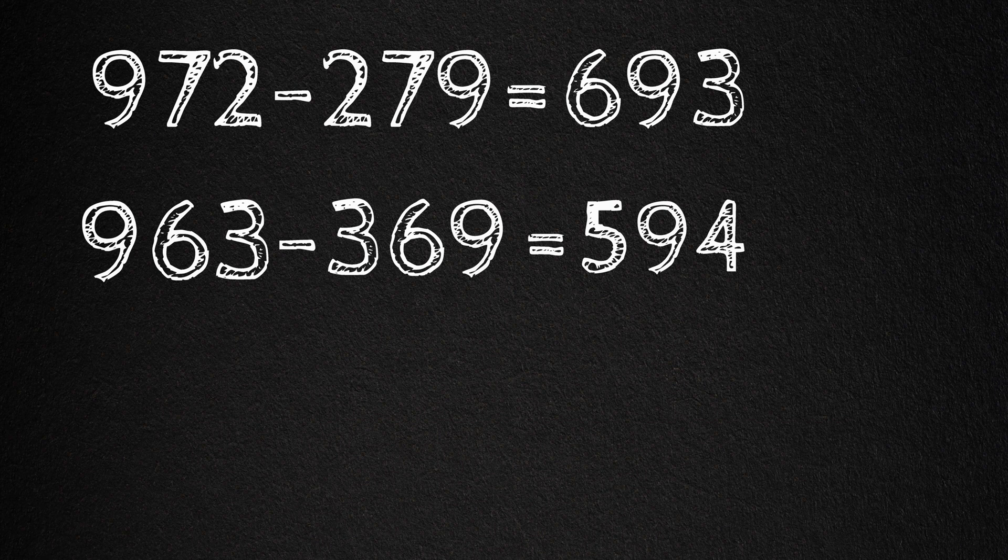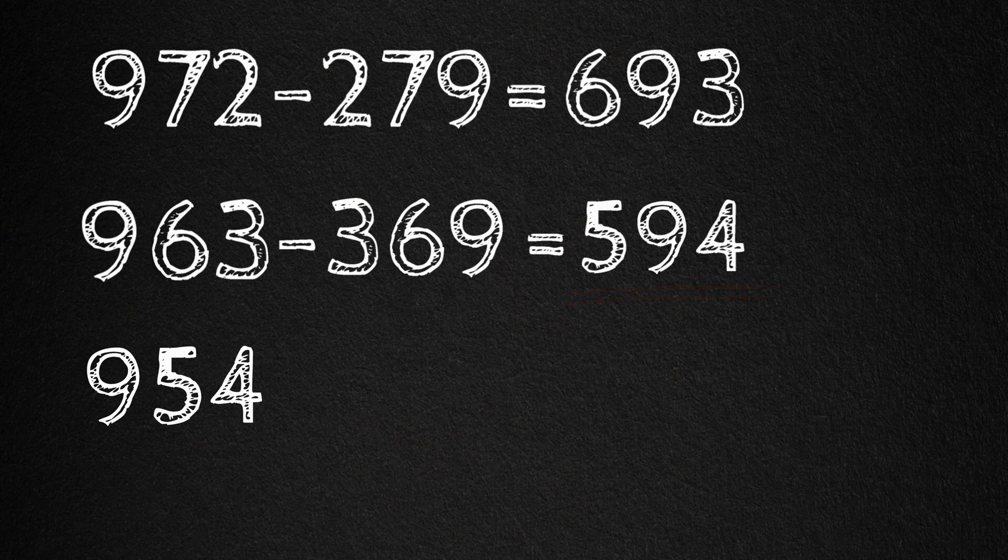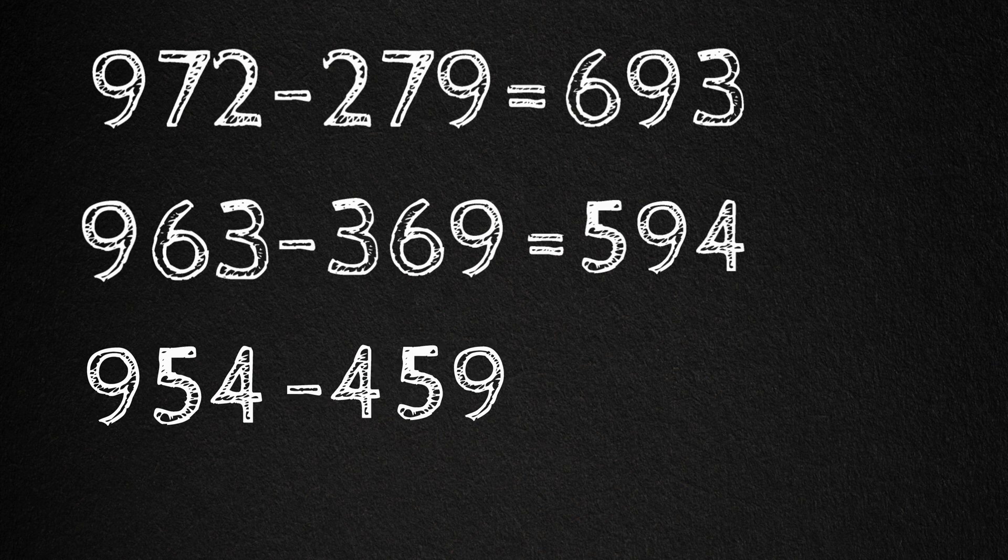Almost there. One more time. Arrange the digits in descending order. So we have 954. And in ascending order, we have 459. Subtract. And we get 495.